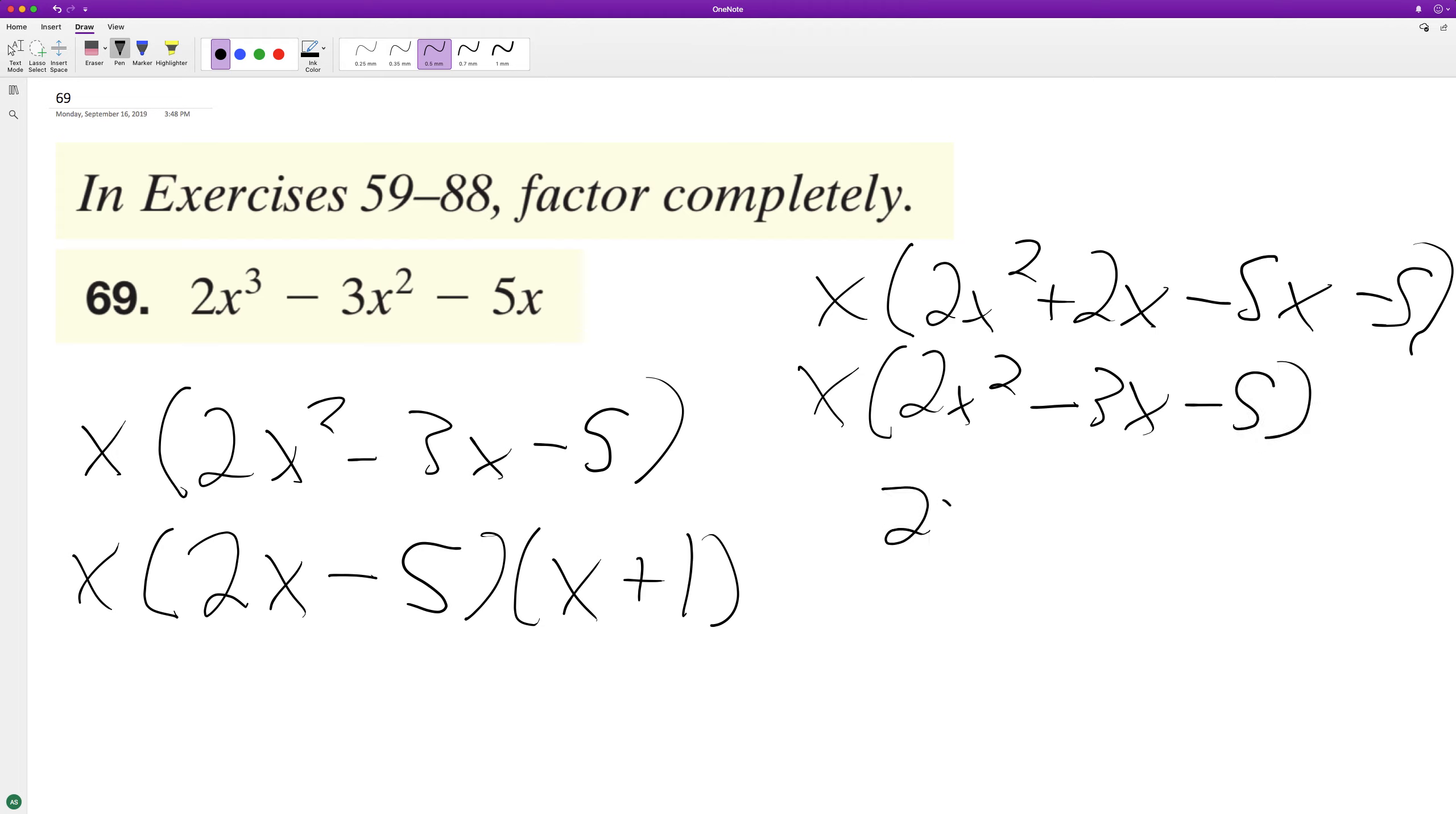Distribute the x, we end up with 2x raised to the third minus 3x squared minus 5x. And since that matches up with our original trinomial, that means this is the correct form.